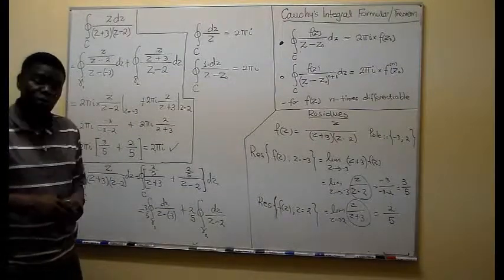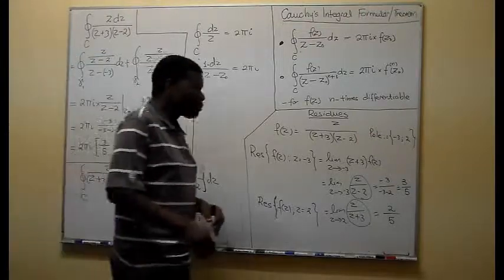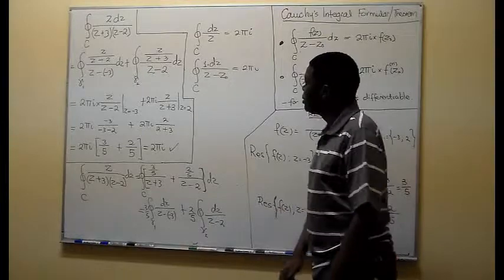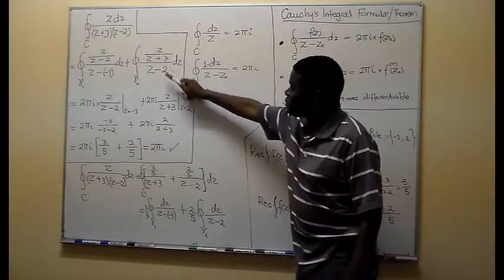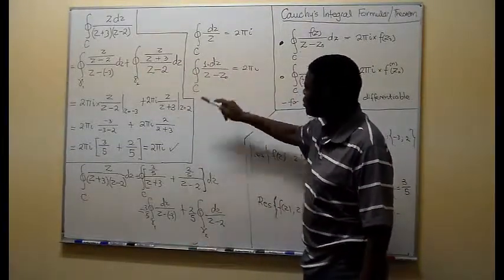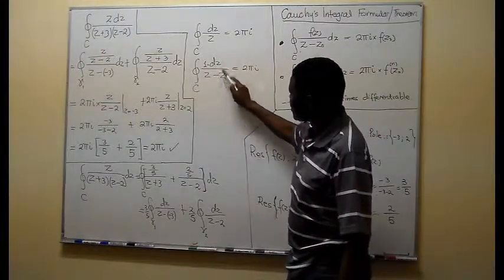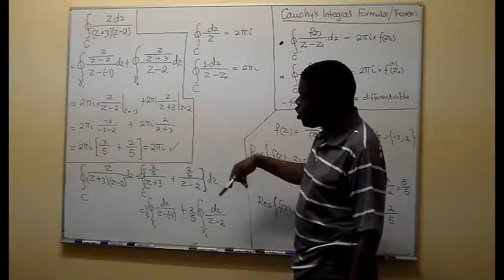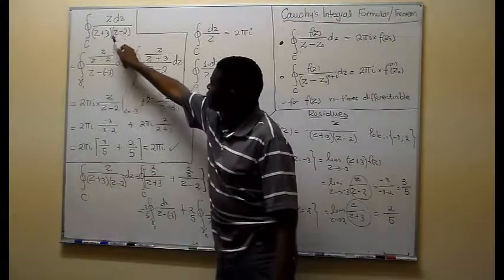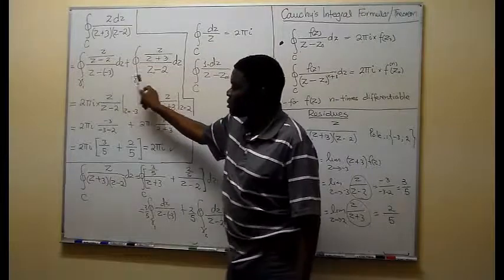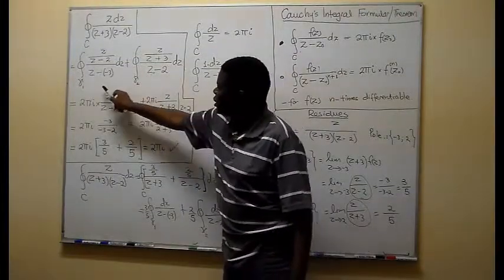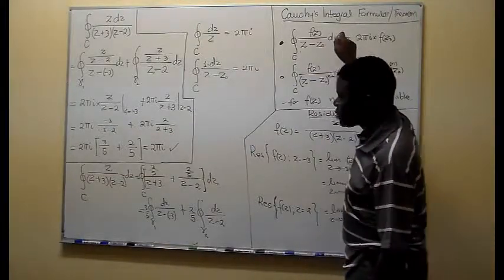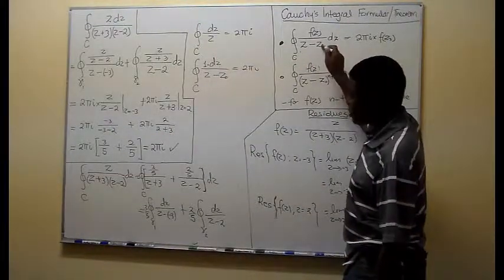So I think that will help you also to remember what you should do. So summarizing, given a problem like that, one, you can integrate it using the initial approach by using partial fractions and taking advantage of this form of integral. Or you can do this manipulation, isolating each pole in a small closed curve containing a single pole and applying Cauchy's integral theorem in this form. That is one approach.